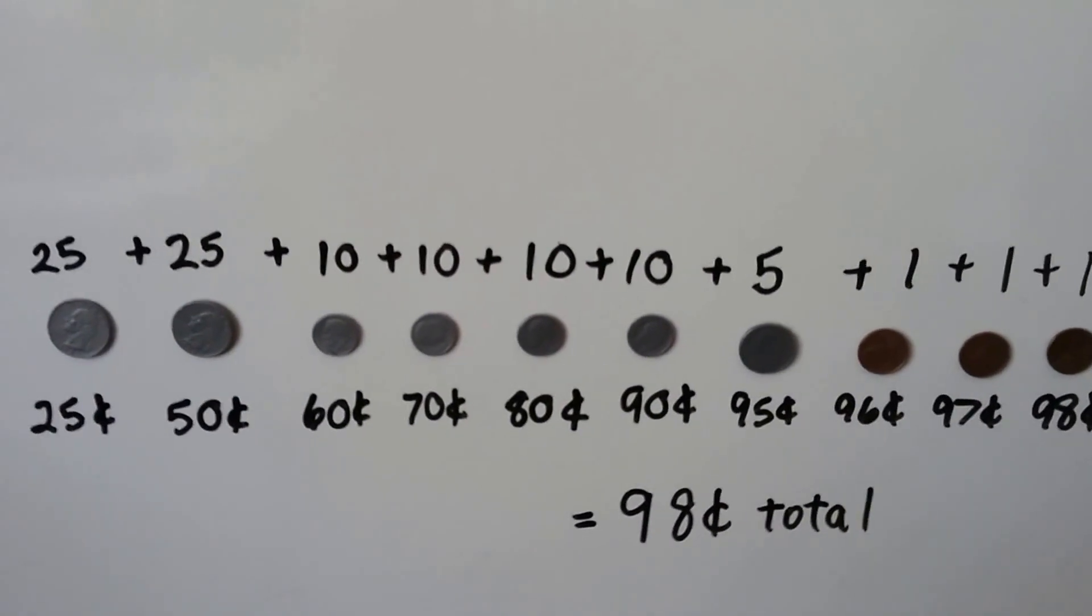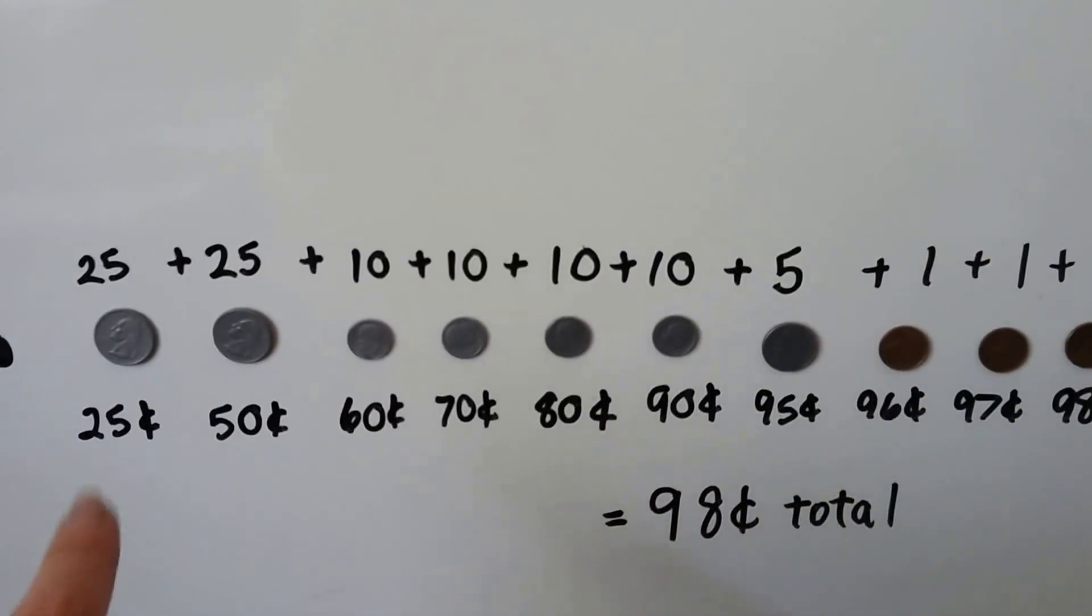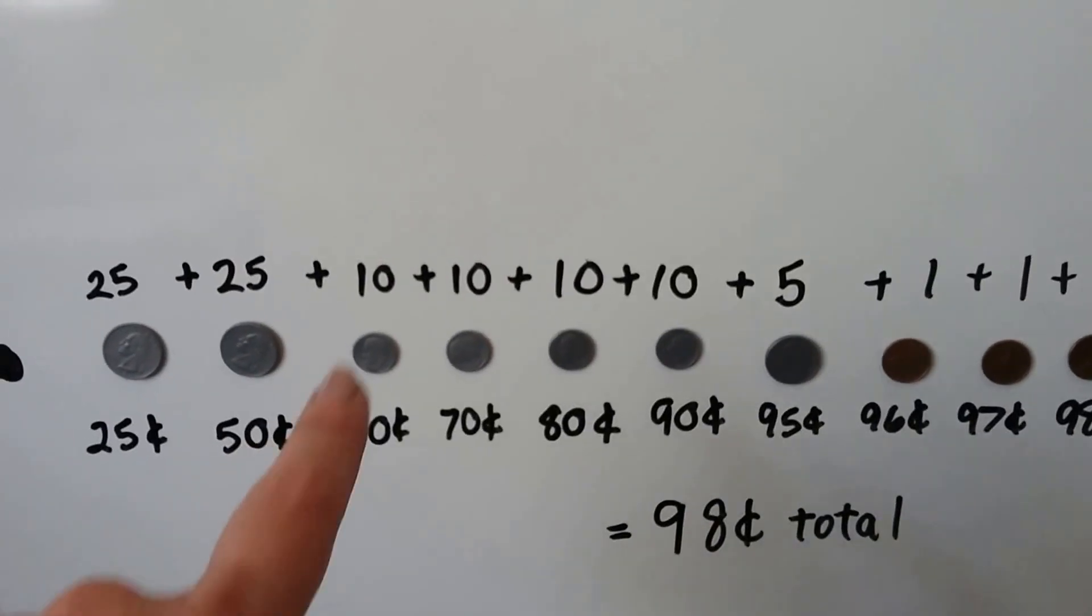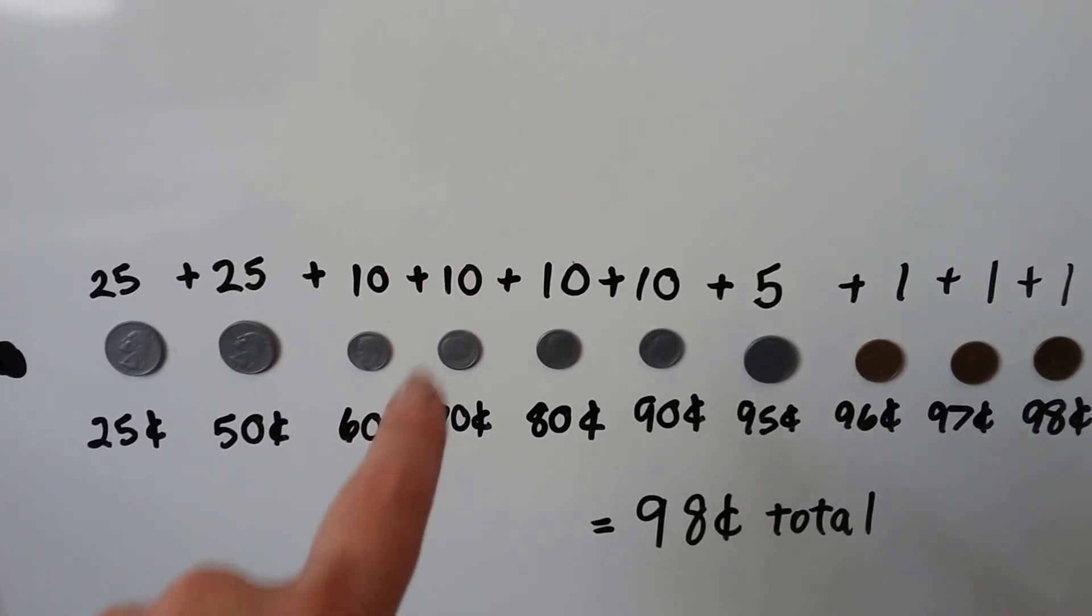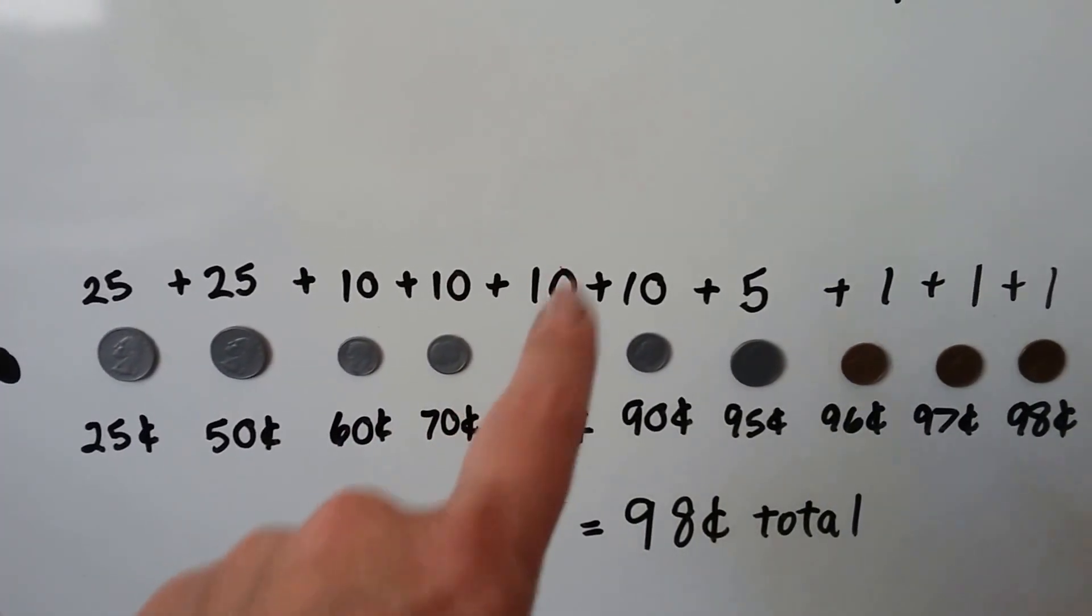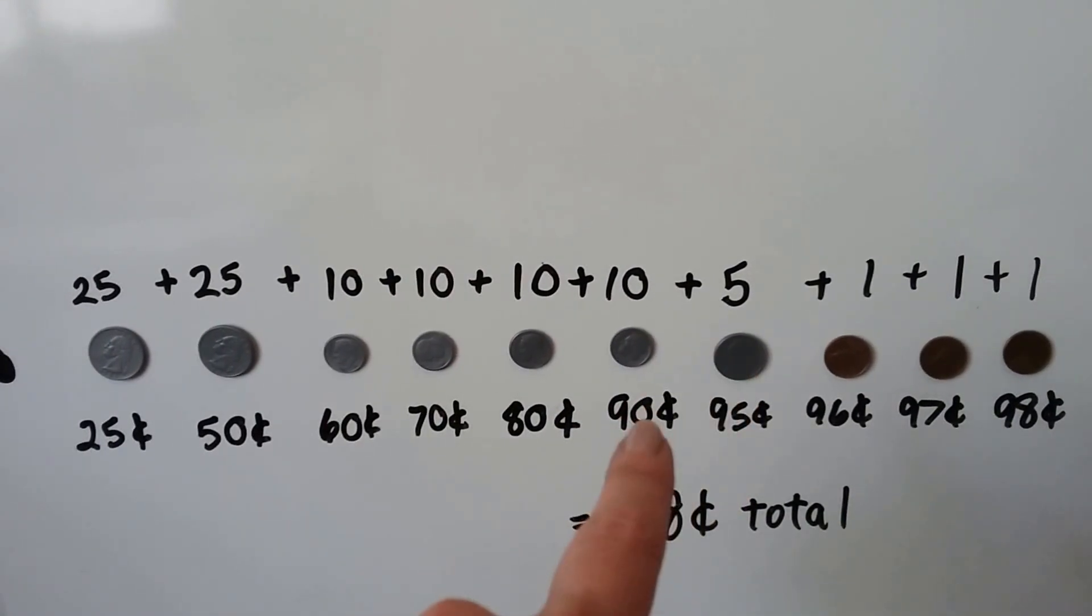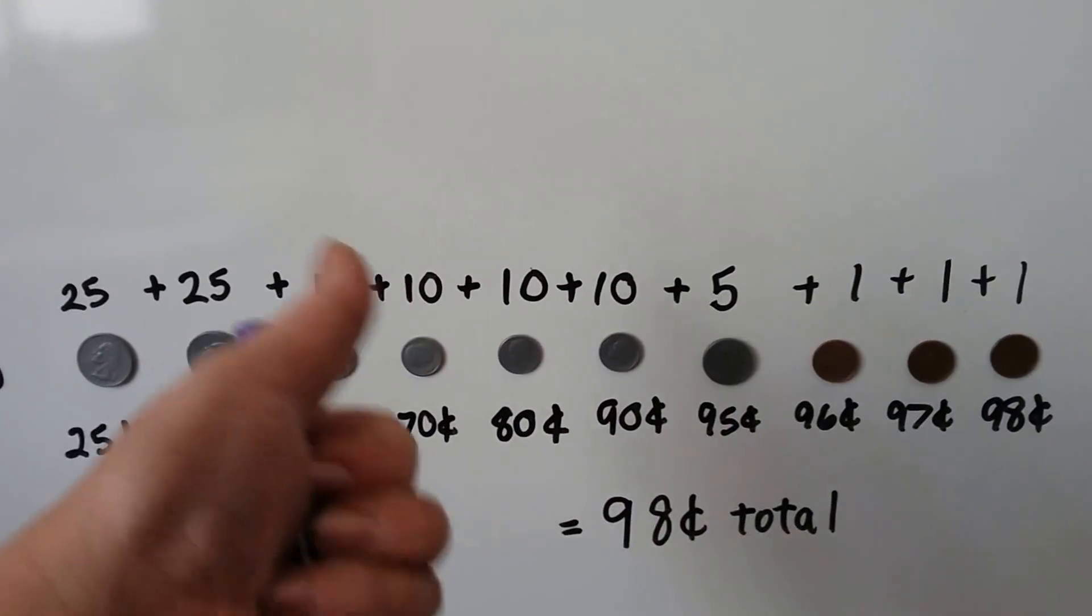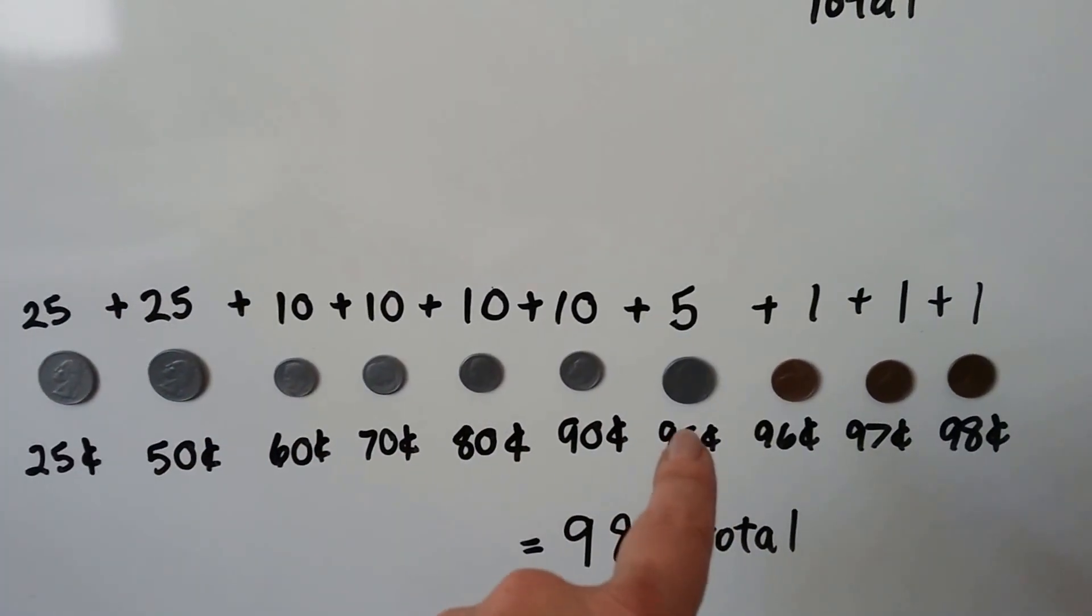Wow, look at all these coins now. We have 2 quarters. We count the 2 quarters, 25, 50. Then we can add a 10. If we count by 10s, 50, 60. Another 10 is 70. Another 10 is 80. Another 10 is 90. Now we add 5. 91, 92, 93, 94, 95. We're at 95 cents.